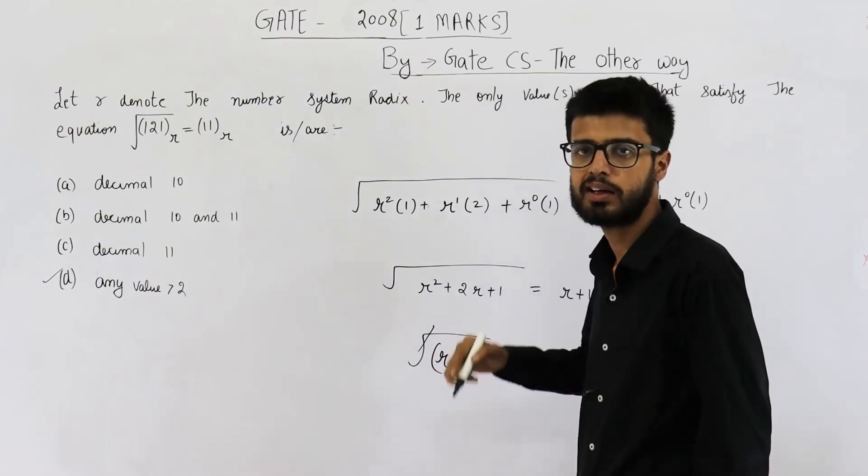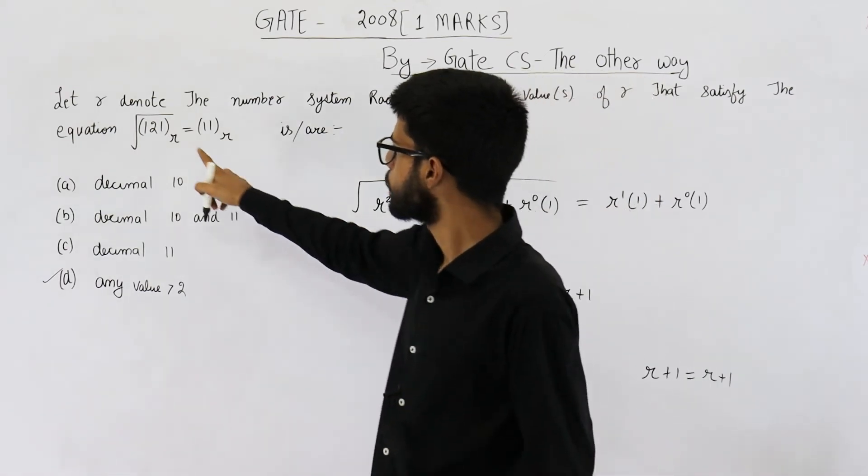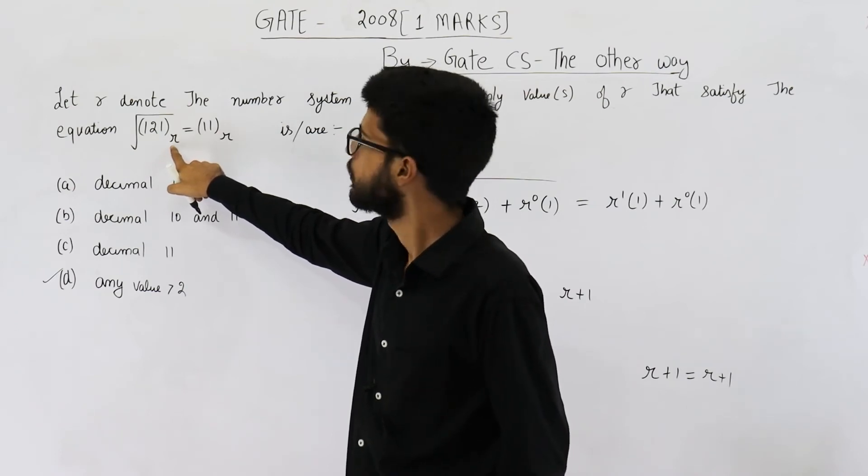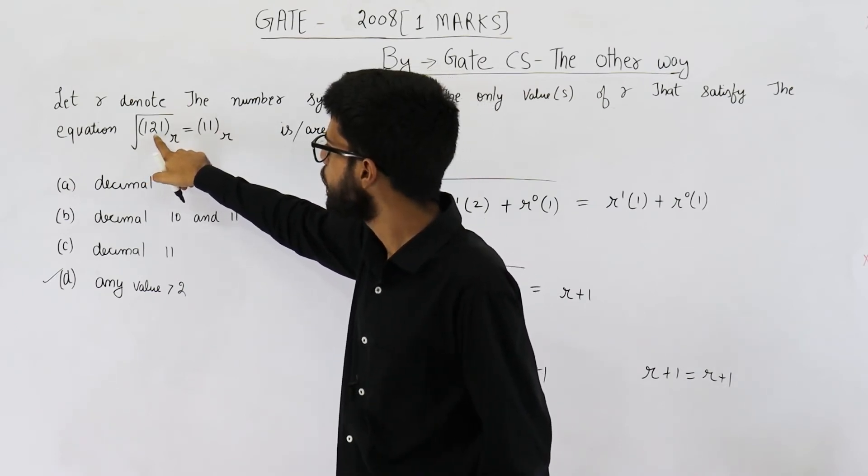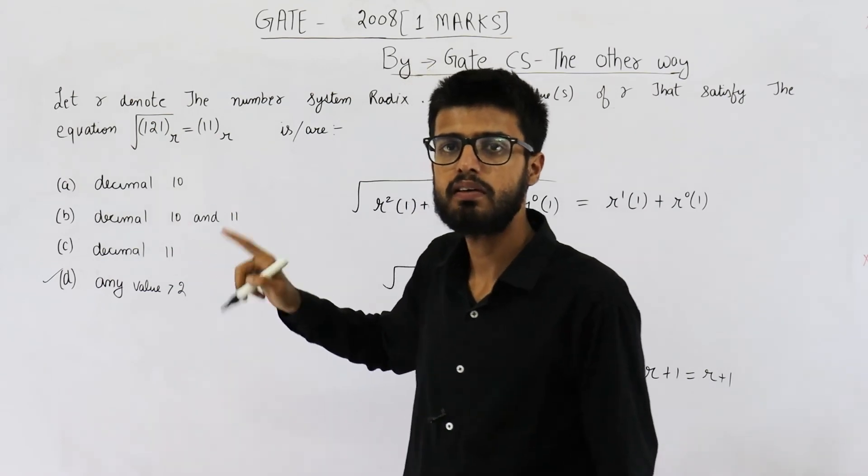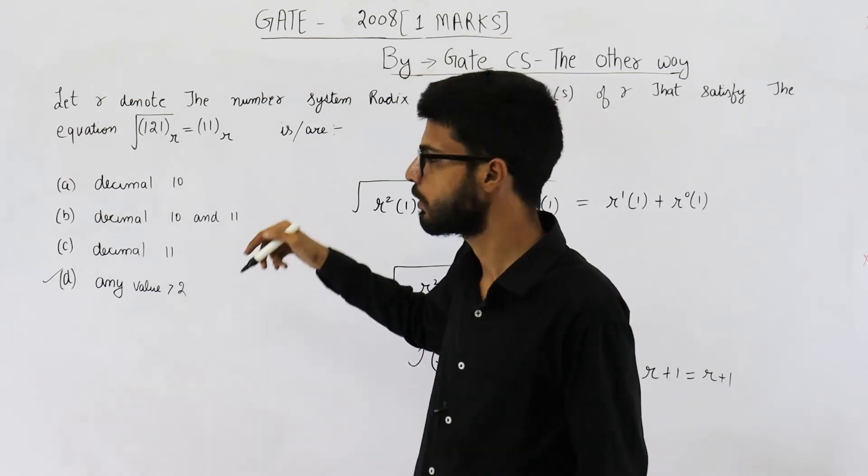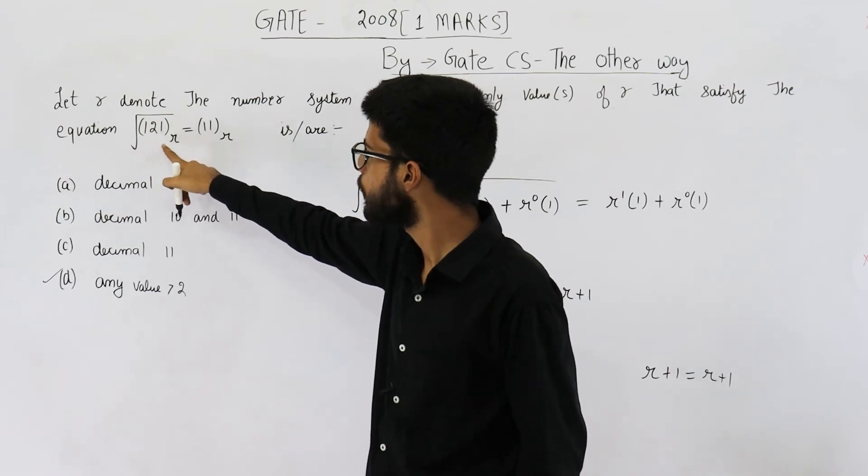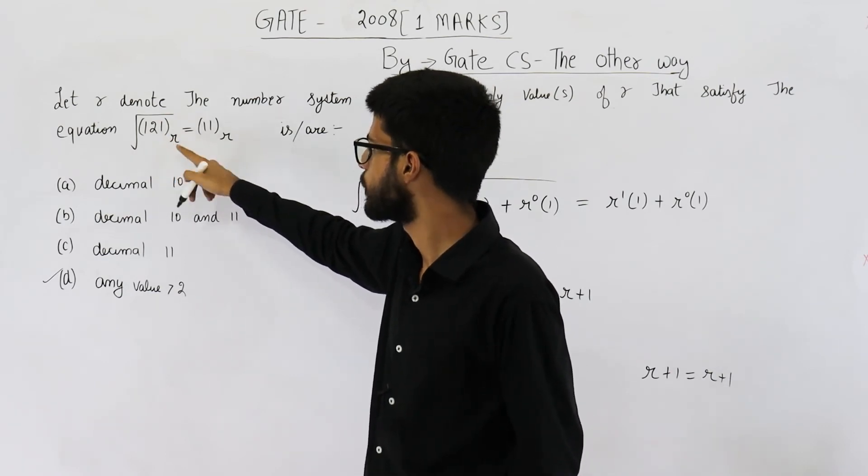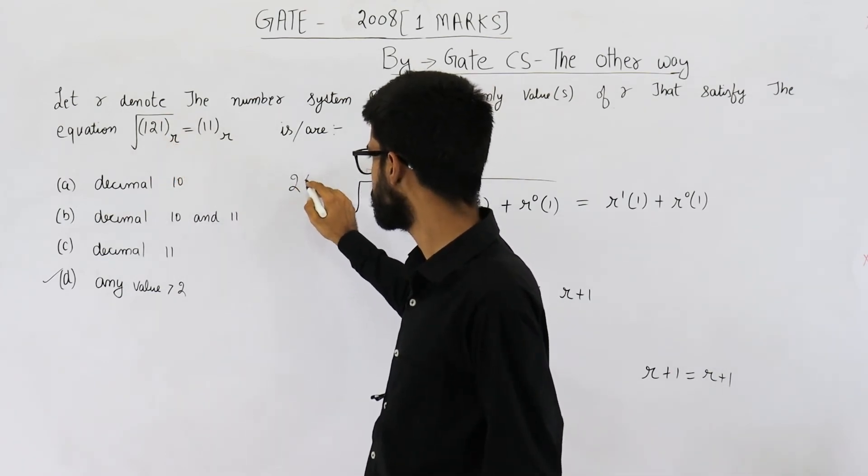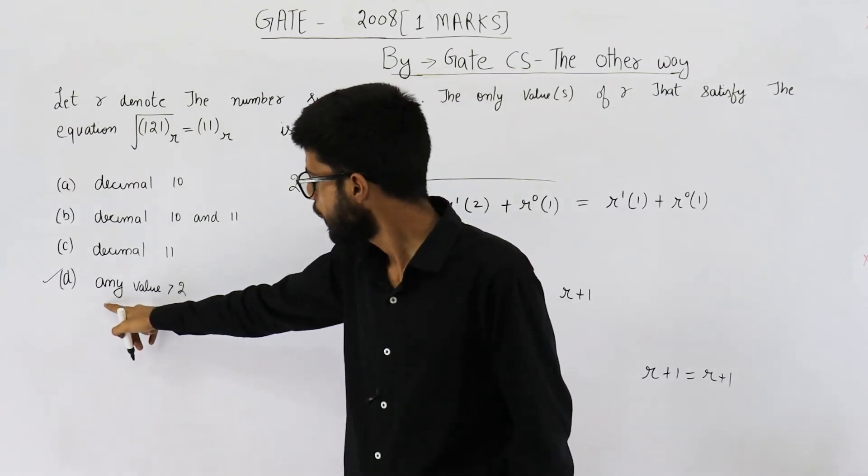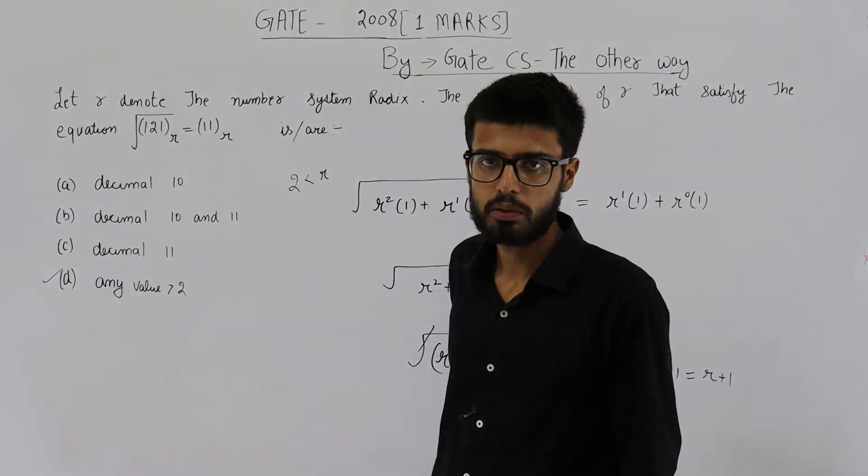How do I know r is greater than 2? Because if the base of number system is r, each and every symbol used here must have a value less than the base, that means value less than r. So 1 must be less than r, 2 must be less than r. This means r must be greater than 2. So any value greater than 2 is acceptable.